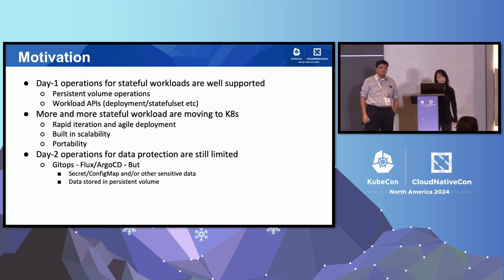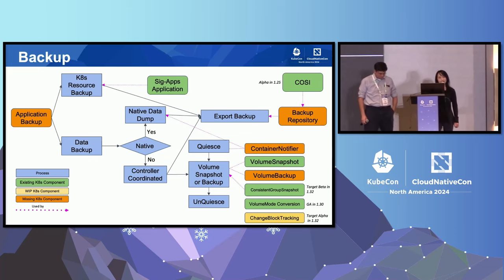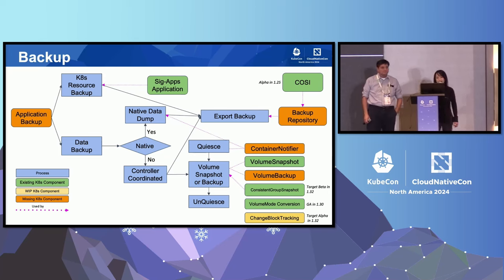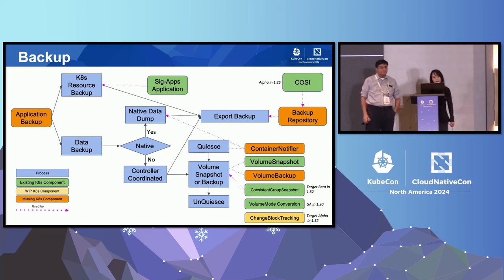This working group is sponsored by both SIG Apps and SIG Storage. This diagram shows the backup workflow with existing and missing building blocks in Kubernetes. To backup an application in Kubernetes, we need to backup two pieces of data: the Kubernetes metadata and the data stored in persistent volumes. To backup data in persistent volumes, we can either use native data dump, such as MySQL dump, or we could use a controller-coordinated approach while a volume snapshot is taken. To ensure application consistency, we need to quiesce the application before taking a snapshot and unquiesce afterwards. Both the metadata and volume data will be exported to a backup repository.